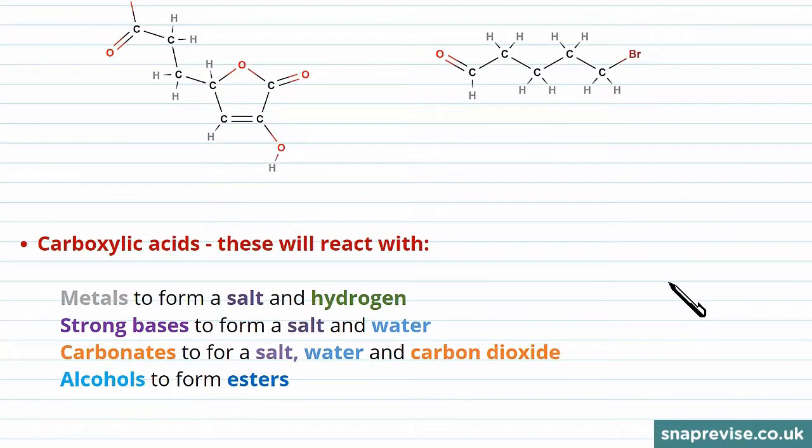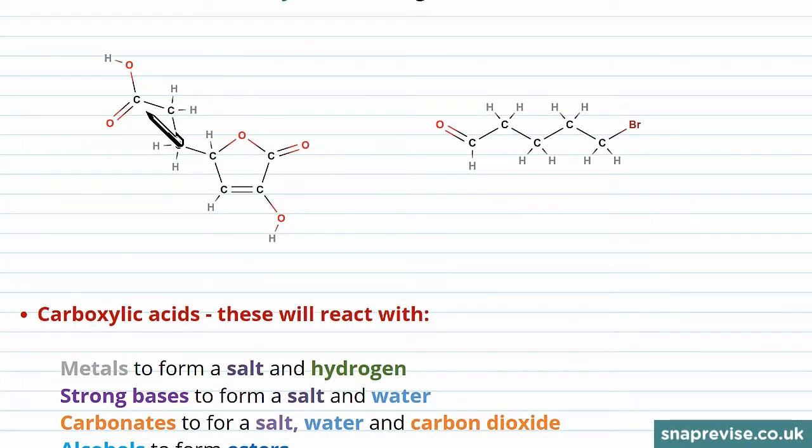We'll start by thinking about carboxylic acids. On these molecules above we can see an example of a carboxylic acid here, where we've got a carbon double bonded to an oxygen and an OH group.